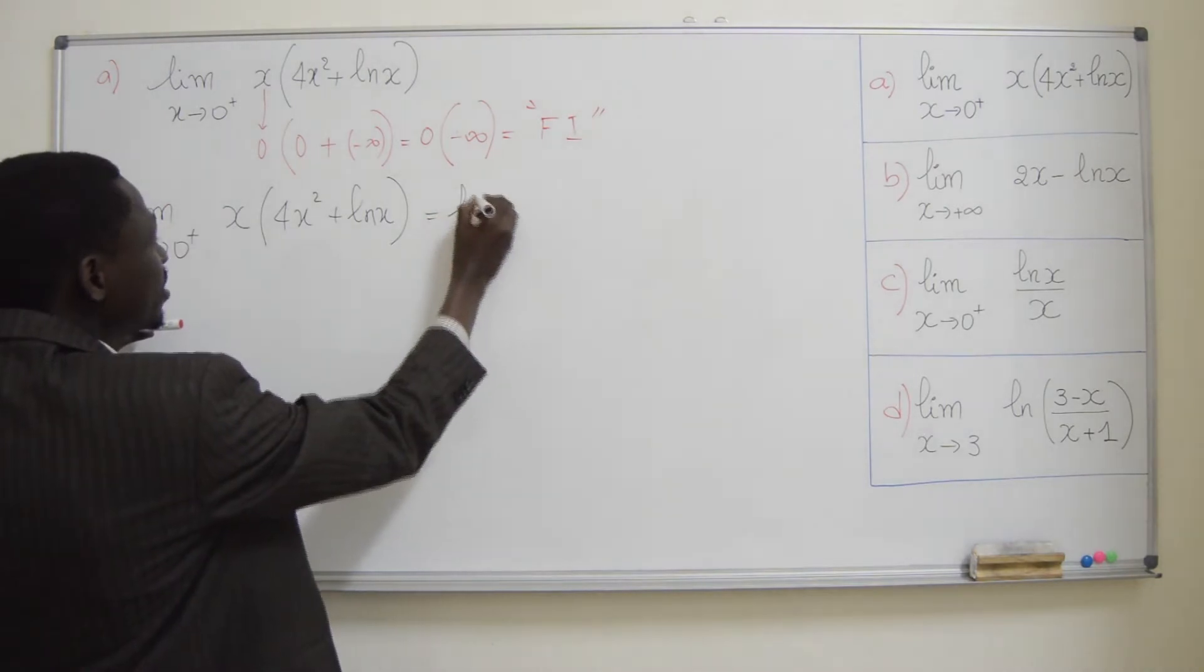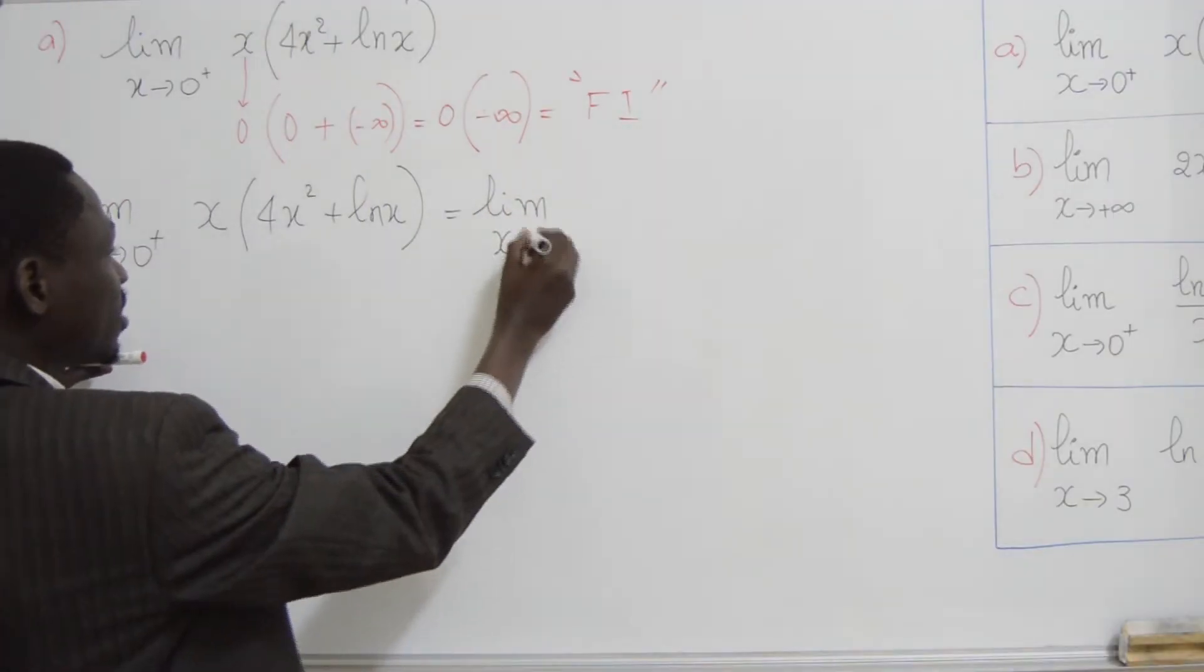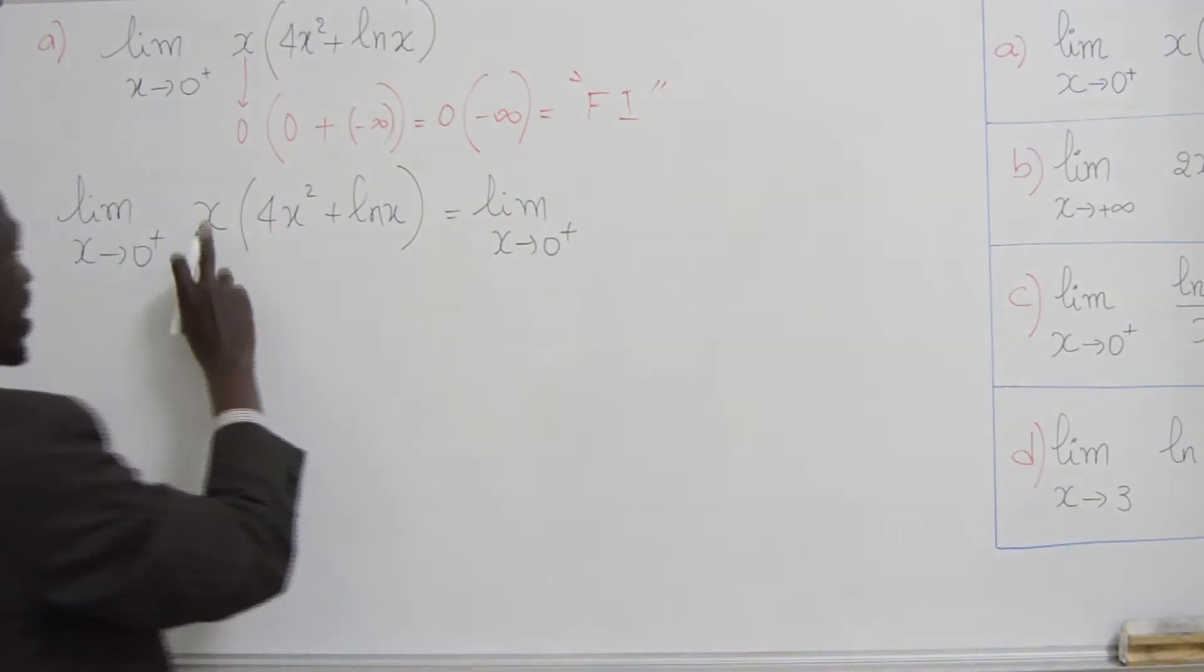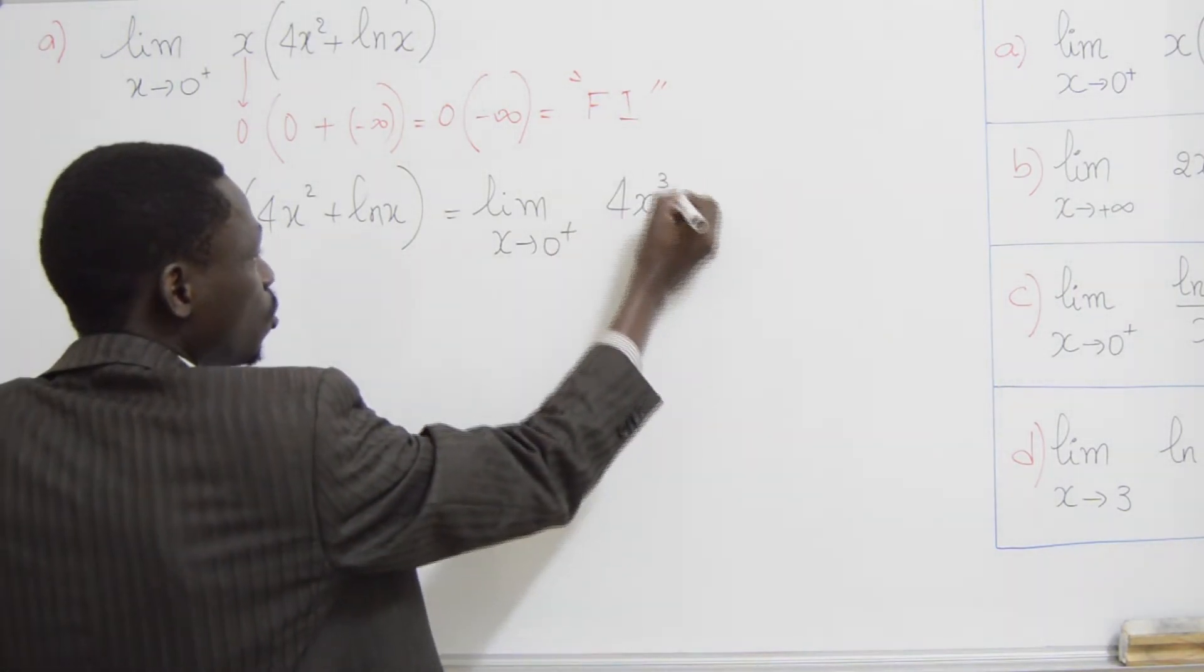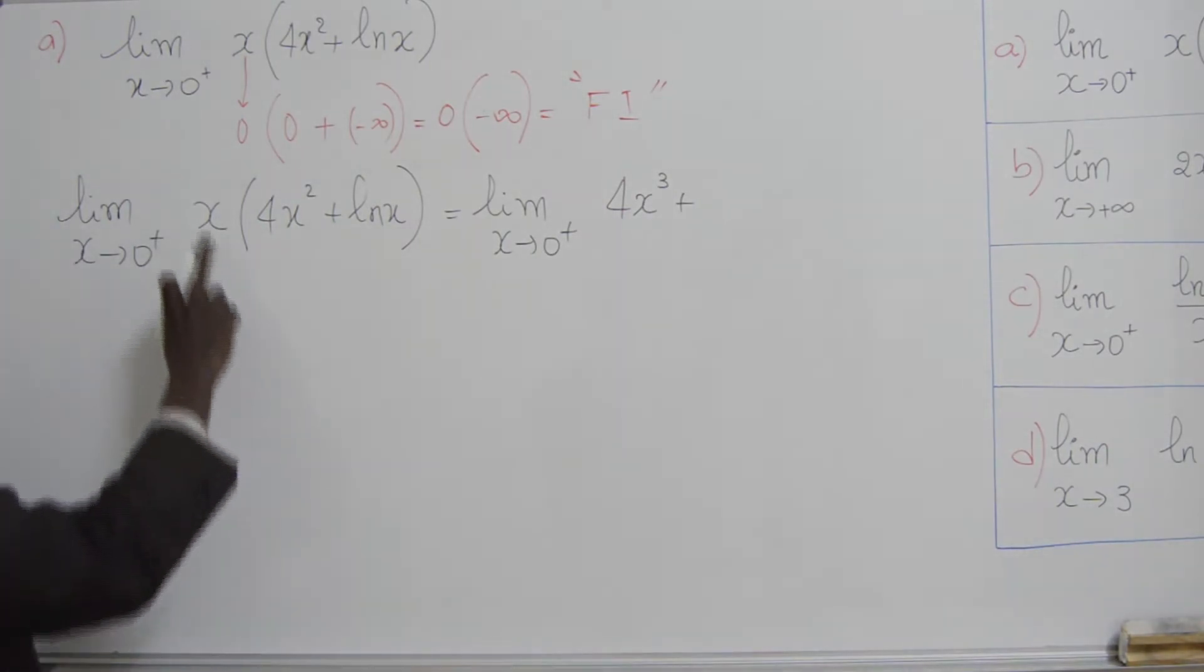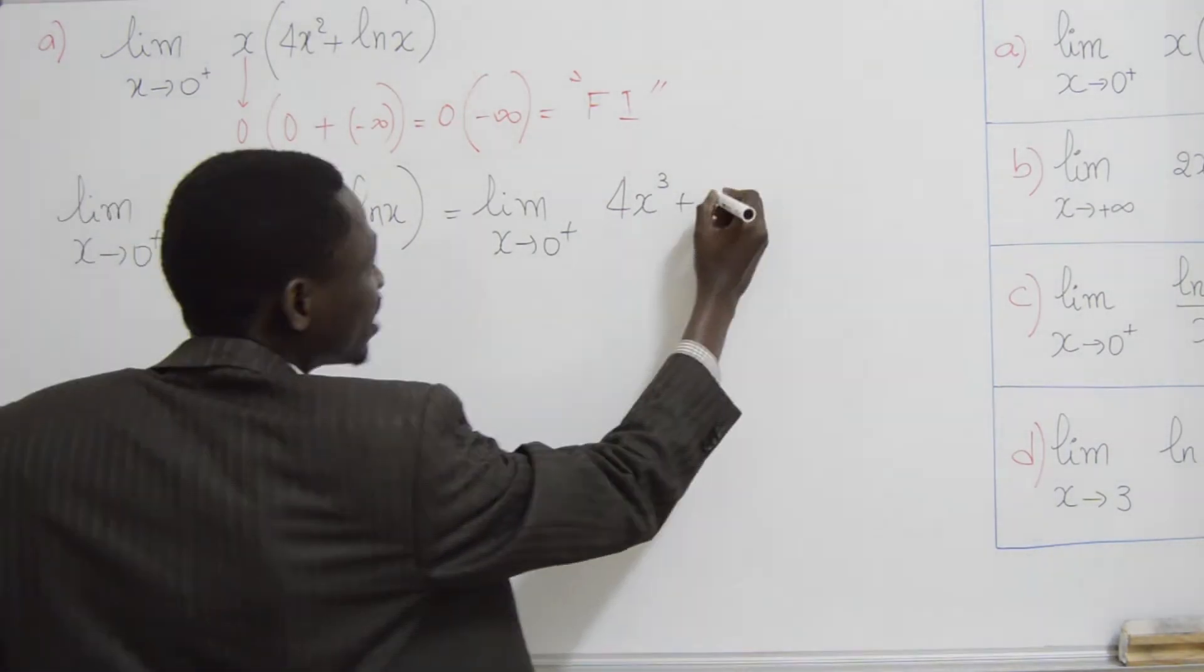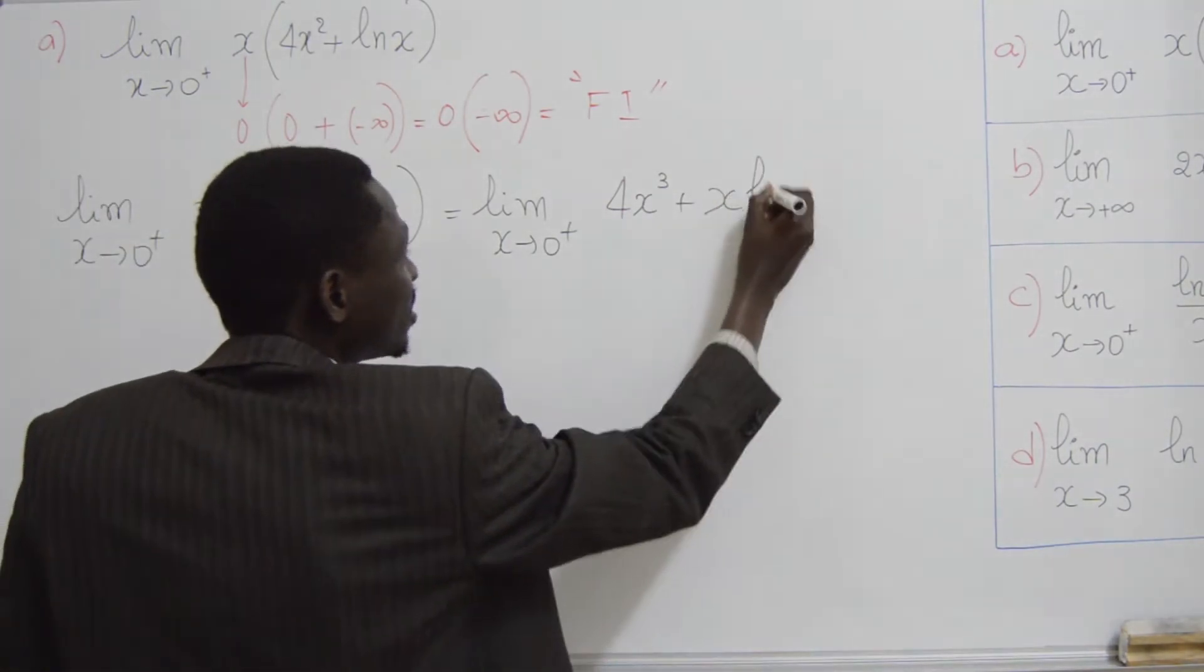Ça donne limite lorsque x tend vers 0 plus. Alors, x fois 4x², ça donne 4x³, plus x fois ln2x, ça donne x ln2x.